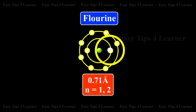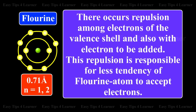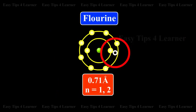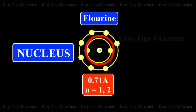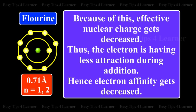Because of the small size of the fluorine atom, the 2P sub-shell becomes compact. There occurs repulsion among the electrons of the valence shell and also with the electron to be added. This repulsion is responsible for the less tendency of fluorine to accept an electron. Because of the small size of fluorine, there occurs large crowding of electrons around the nucleus, which screens the nucleus and decreases the effective nuclear charge. Thus, the incoming electron experiences less attraction, and hence electron affinity gets decreased.